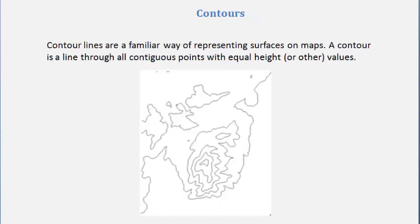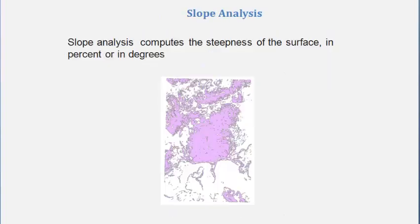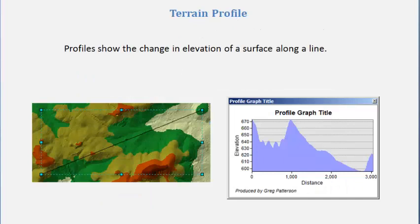From the TIN we'll generate a DEM product and produce all the other products from there. Using the DEM we're going to produce contours, hill and valley shading, conduct some slope analysis, and produce aspect data.